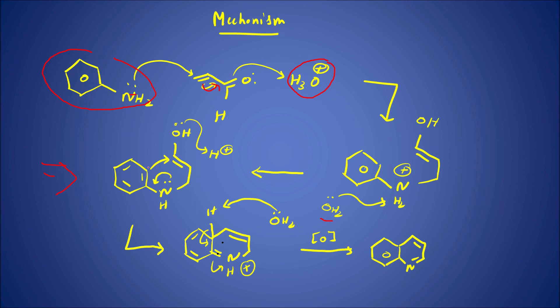After a number of steps: the lone pair on oxygen abstracts H⁺ from the acid, forming an oxonium ion (OH₂⁺) — a very good leaving group. The benzene double bond then attacks that carbon and water is eliminated. This happens because the NH lone pair donates electrons, the double bond attacks the carbon, and water leaves. At this step our dihydroquinoline intermediate is formed.